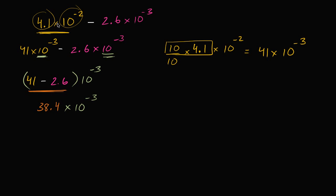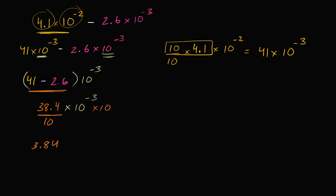Now this is the difference of the two numbers, but it's no longer in scientific notation. In order to be in scientific notation, the leading number has to be greater than or equal to 1 and less than 10. So we divide 38.4 by 10 to get 3.84, and multiply 10 to the negative 3 by 10 to get 10 to the negative 2. The final answer is 3.84 times 10 to the negative 2 power.